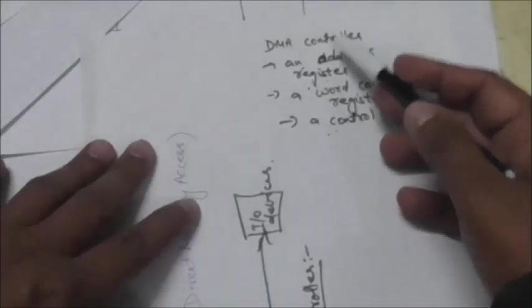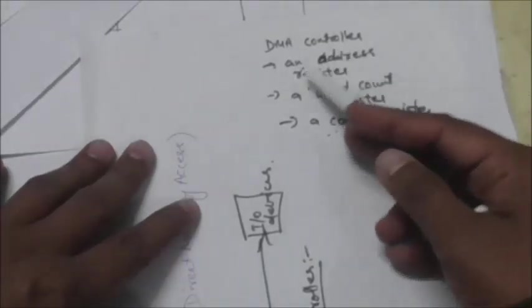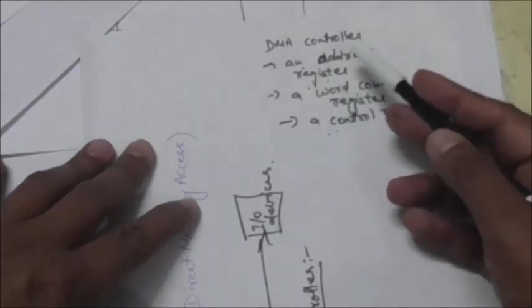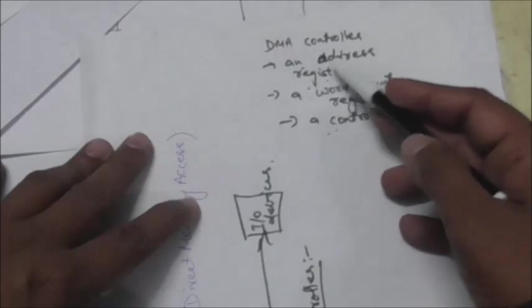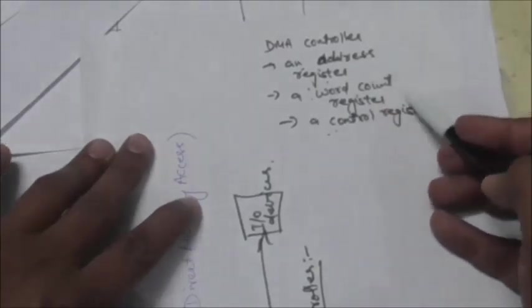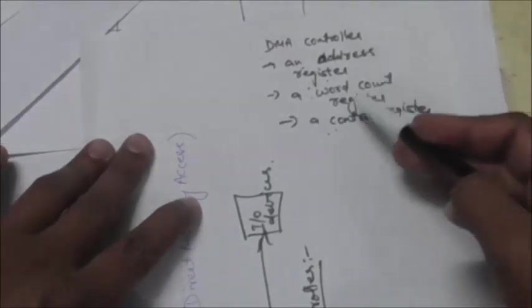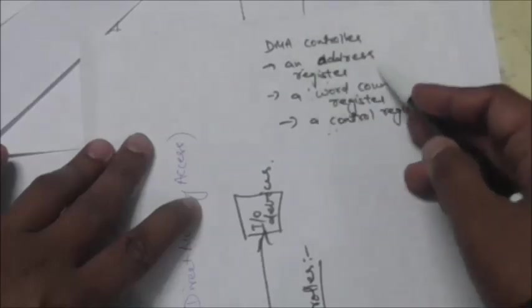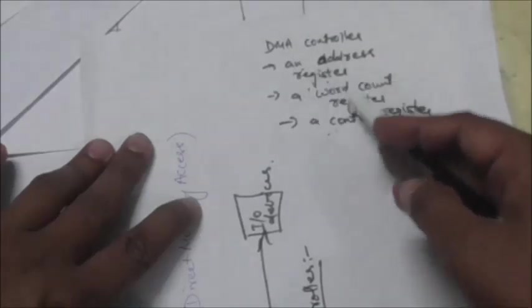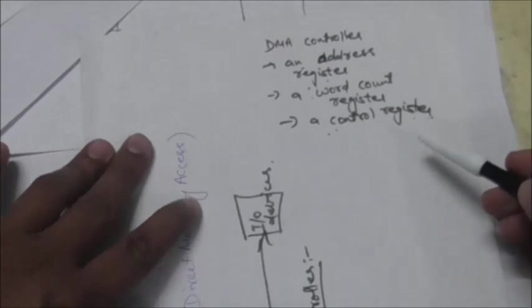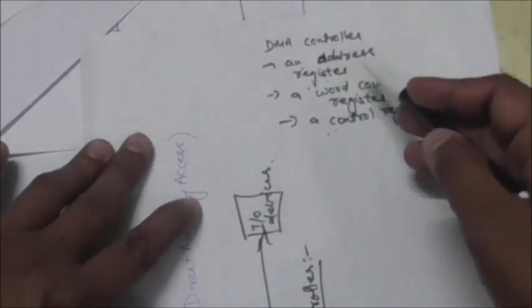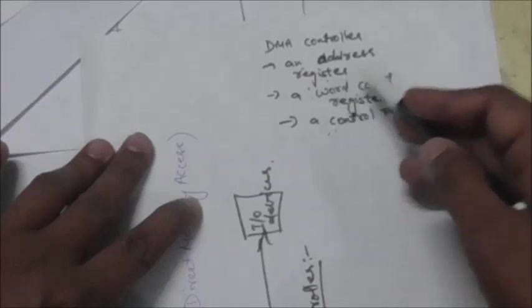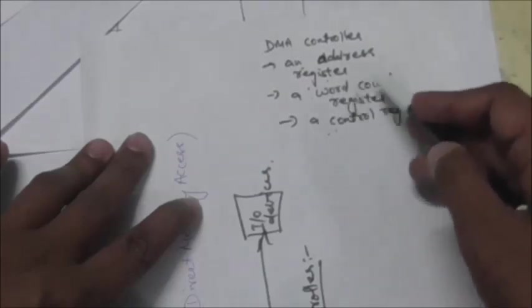Usually the DMA controller increments the address register after each word transfer, so that the address register contains the address of the next memory location. Because after each word transfer, the next transfer will be from the next memory location. And the word count is decremented by one after each word transfer.